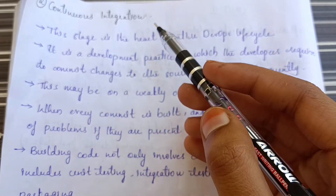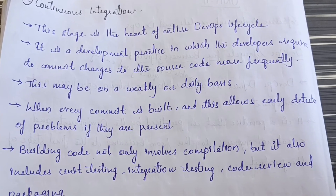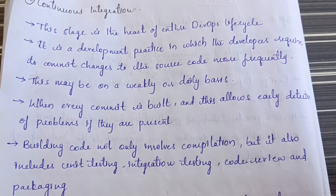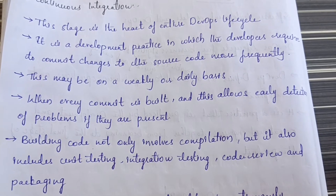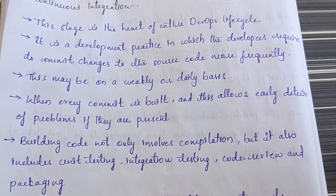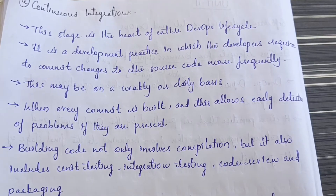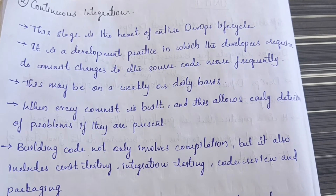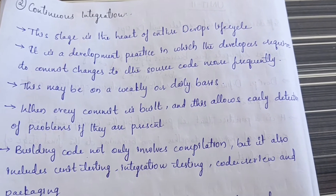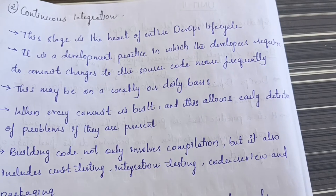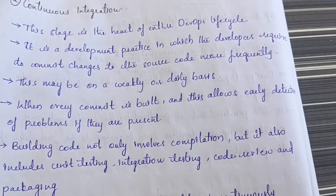The second phase of the DevOps lifecycle is continuous integration, and this stage is the heart of the entire DevOps lifecycle. In this practice, developers commit changes to the source code more frequently — this may be done on a daily or weekly basis. Every commit is built, which allows early detection of problems if they are present.